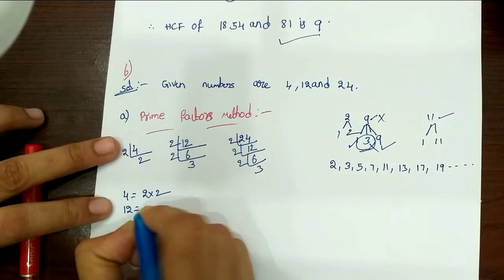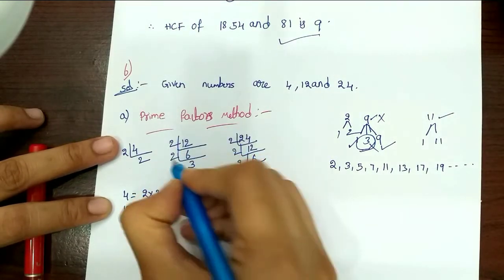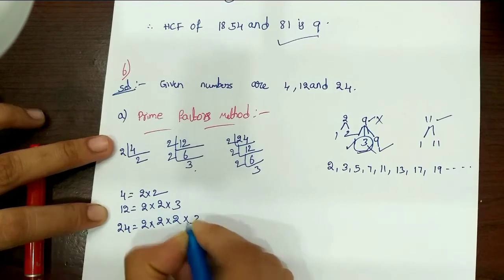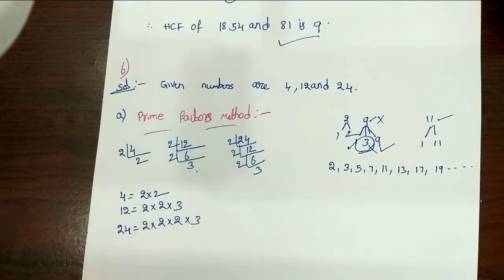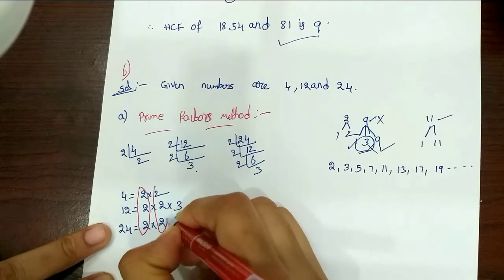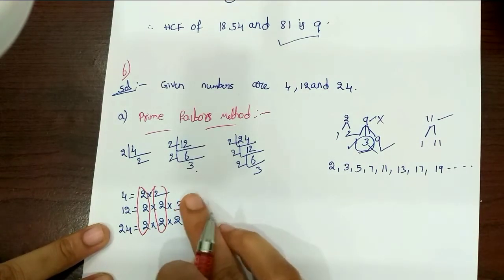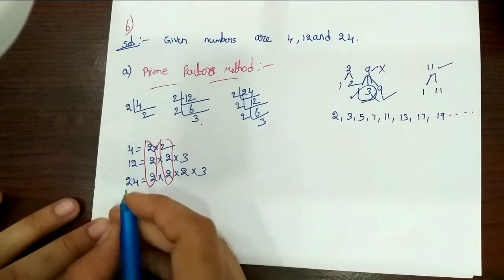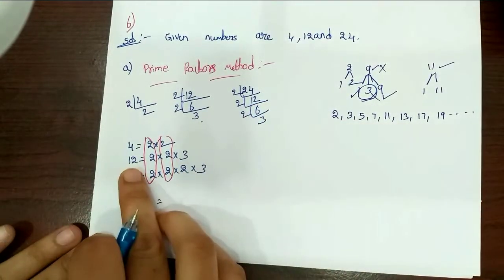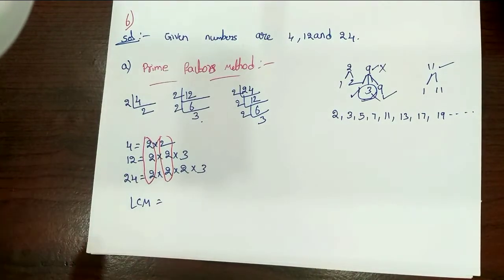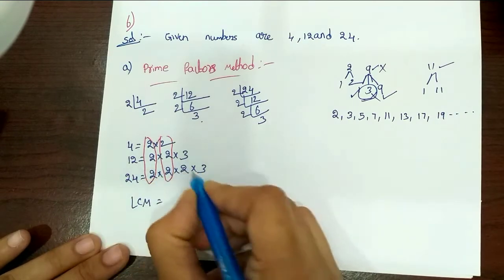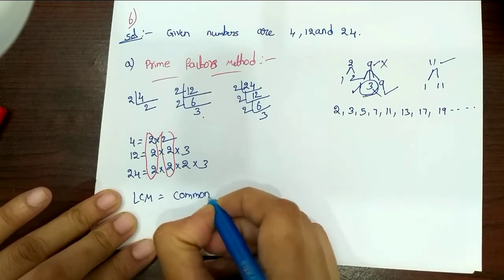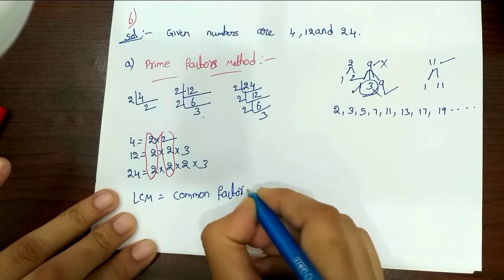2 into 2. Next, 12. Next, 4. So 2 into 2. Next, 24. So 2 into 2, next 2 into 3, next 1 into 3.